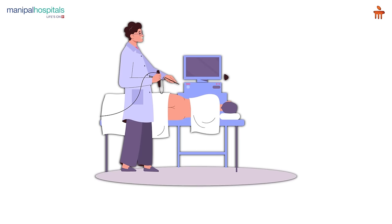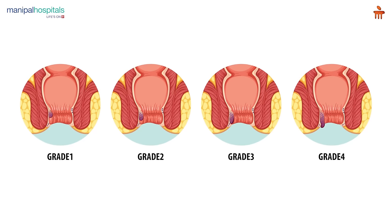For hemorrhoids, we normally perform anoscopy to determine what grade the patient has. Hemorrhoids are graded 1 through 4. Grade 4 is always a painful condition where the patient presents with a prolapse.